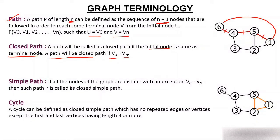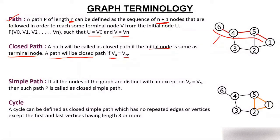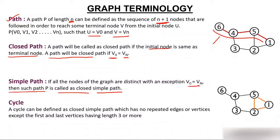A simple path is one where all the nodes in the path are distinct. If all nodes are distinct — with the exception that the first and last node can be equal — then such a path is called a closed simple path.